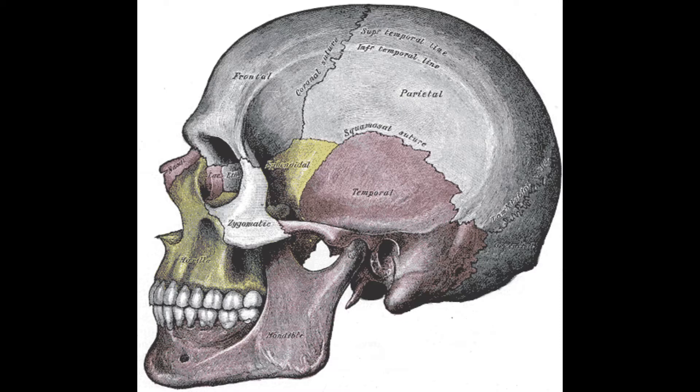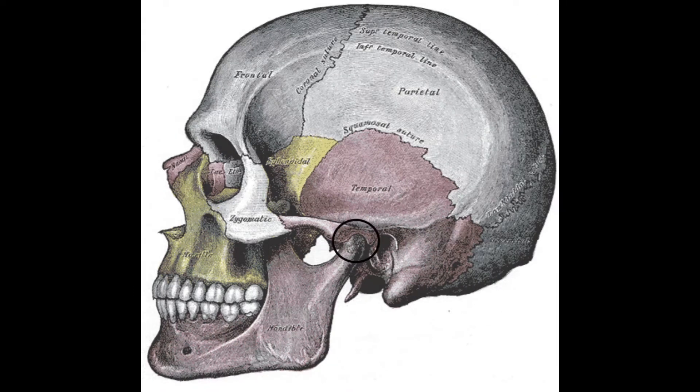We can see the zygomatic arch, a good view of the mandible and the maxilla. The temporomandibular joint is comprised of the condyles of the mandible and the mandibular fossa of the temporal bone. When opening at the temporomandibular joint, it is actually depression and anterior translation of the mandible together.